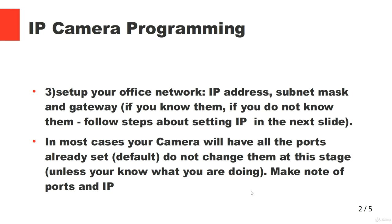Then you set up your network IP address, subnet mask, and gateway. If you know them, enter them; if you don't, follow the steps about IP settings on the next slide. In most cases your camera will have all ports already set to default — do not change them at this stage unless you really know what you're doing. Make note of all the ports and IP settings.